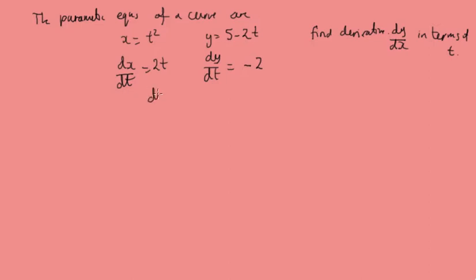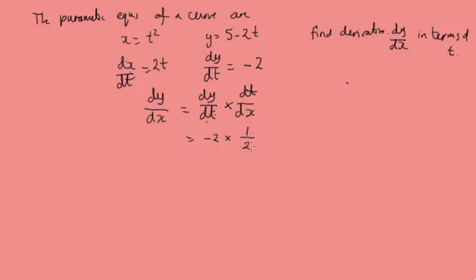Applying the chain rule principle, dy/dx equals dy/dt times dt/dx, because then the dt's cancel out. We know dy/dt is minus 2, and dt/dx — well, dx/dt is 2t, so if we take the inverse of that, dt/dx will be 1 over 2t. Cancelling that out, we get dy/dx equals minus 1 over t.